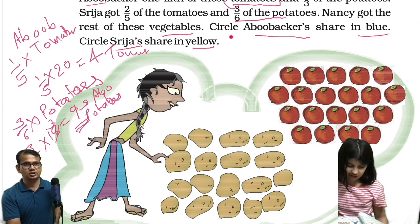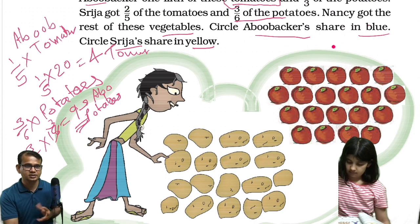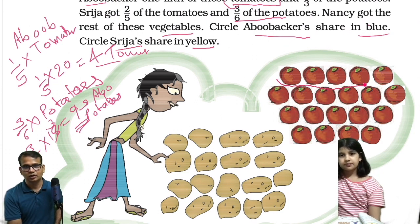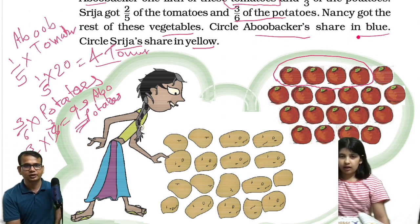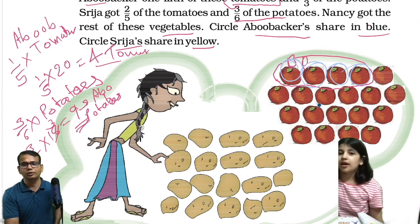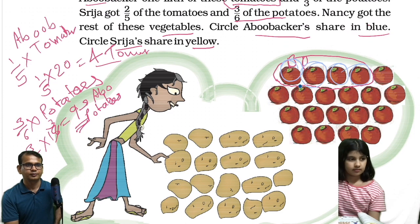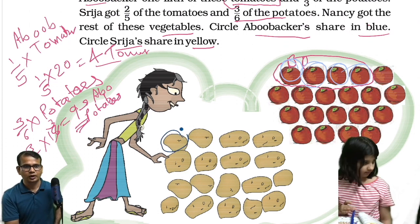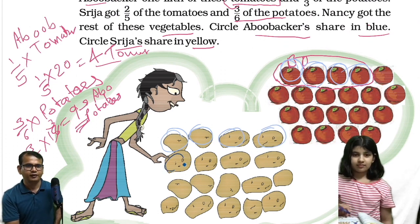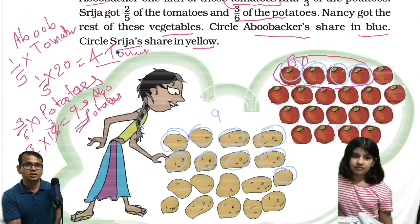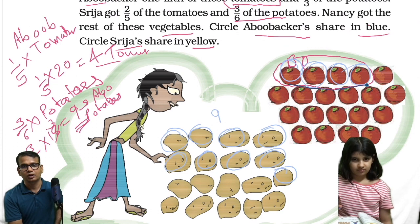Nancy got the rest of these vegetables. Circle Abu Bakar's share in blue. Abu Bakar got four tomatoes — I'll circle these four. And nine potatoes — I'll color them in blue. One, two, three, four tomatoes circled. And nine potatoes: one, two, three, four, five, six, seven, eight, nine potatoes circled in blue. The number is what's important.